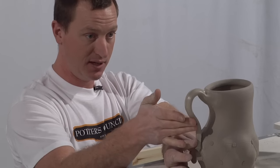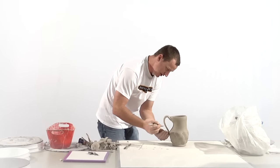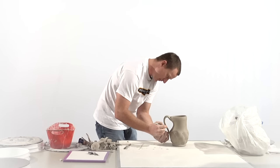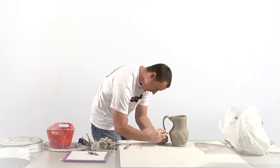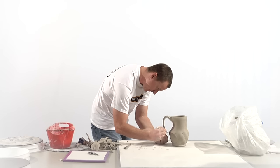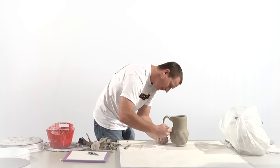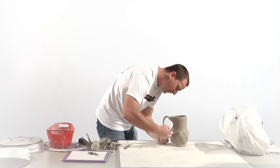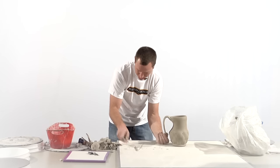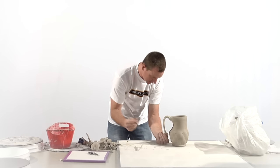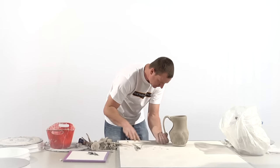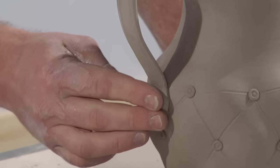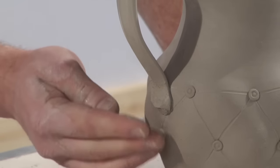The entire presence of the piece can be changed by pulling the handle up like this or down like this. Notice how this has a different effect than this. I will go ahead and score where the handle is going to connect back to the piece here, and the handle. A little bit of slip. I'm now going to push that handle on there and wiggle it around a little bit and make sure that it has a good strong connection.